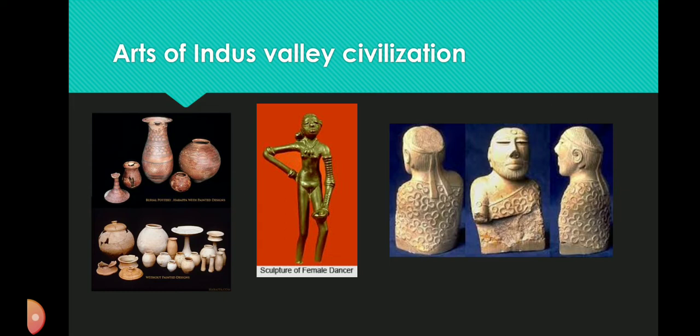Bronze Casting: The Harappans practiced the art of bronze casting on a wide scale. They used the lost wax technique, in which wax figures were first covered with a coating of clay and allowed to dry. They used this technique for human as well as animal figures, and the best example is the Dancing Girl found at Mohenjo-daro. Bronze casting was popular at all major centers of the Indus Valley Civilization, and notably similar techniques are practiced even now in many parts of the country.